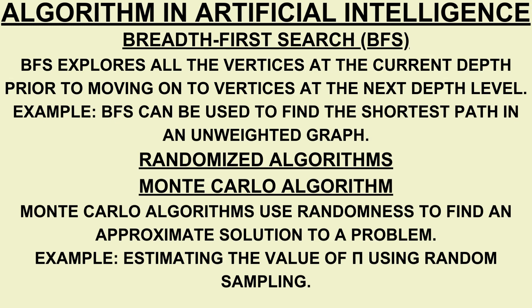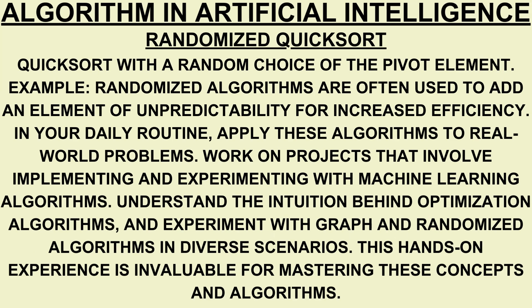Randomized algorithms: Monte Carlo algorithms use randomness to find an approximate solution to a problem, such as estimating the value of pi using random sampling. Randomized quicksort uses a random choice of the pivot element. Randomized algorithms are often used to add an element of unpredictability for increased efficiency. In your daily routine, apply these algorithms to real-world problems, work on projects involving machine learning algorithms, and experiment with graph and randomized algorithms in diverse scenarios.